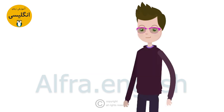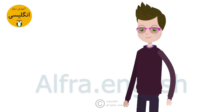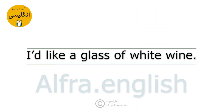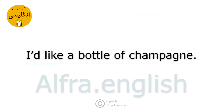یک لیوان شراب قرمز میخواهم. I'd like a glass of red wine. یک لیوان شراب سفید میخواهم. I'd like a glass of white wine. یک بطری شامپاین میخواهم. I'd like a bottle of champagne.